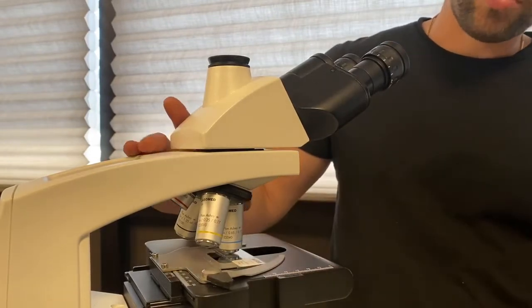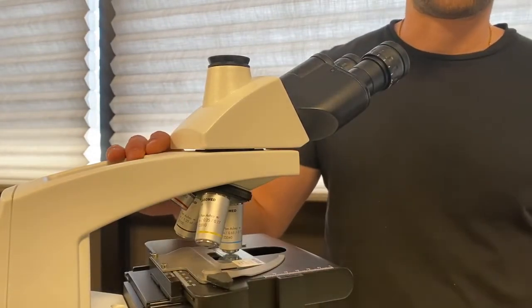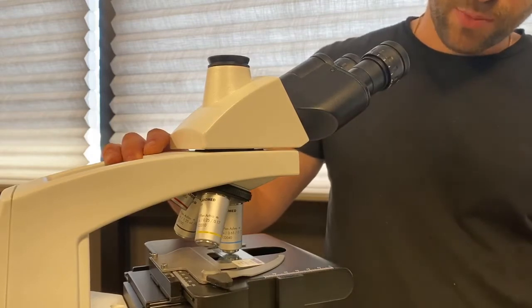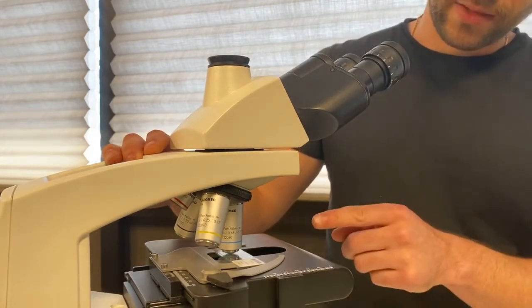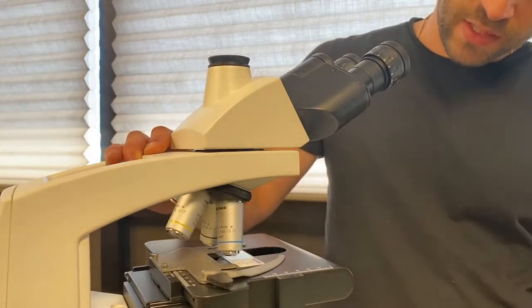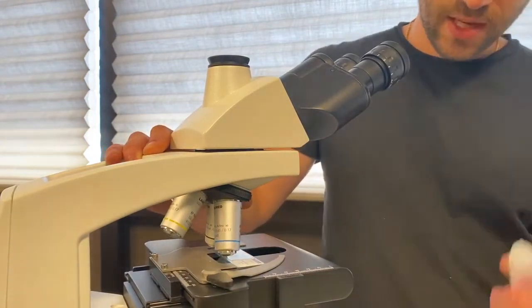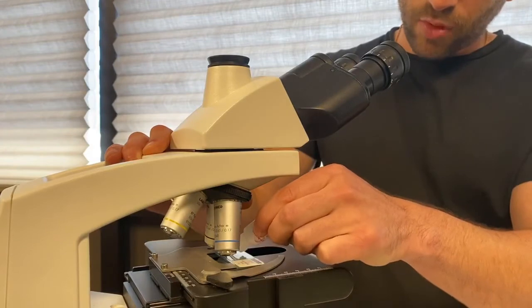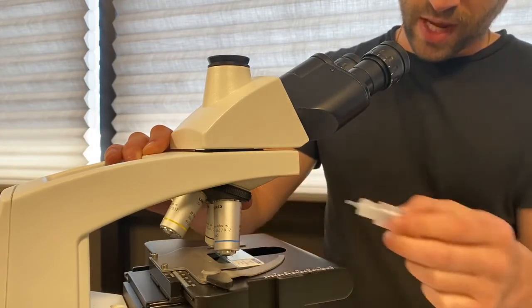When you use a 100x objective, you need to apply a drop of oil to the top of your coverslip. After you get your sample into focus with your 40x objective and you're ready to move on to your 100x, simply rotate the nose piece so they're in between objectives, take your bottle of oil, and apply a small drop to the top of the coverslip.